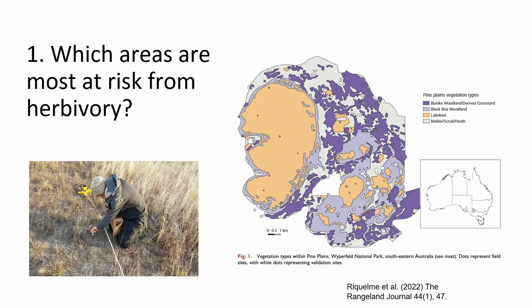To address the first question, I and some wonderful volunteers went out and sampled biomass. That involved a lot of clipping, putting grass in bags, then drying and weighing. We sampled biomass over a period of two and a half years, going out in different seasons during really wet and really dry periods, and across a whole range of vegetation types — pine plains, dry lake beds, black box woodlands, and bull oak woodlands.